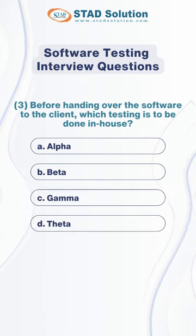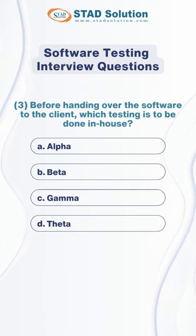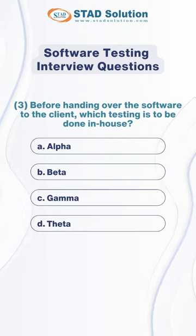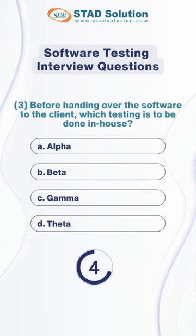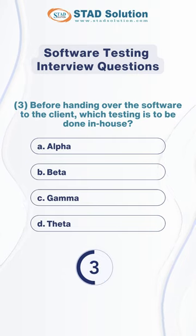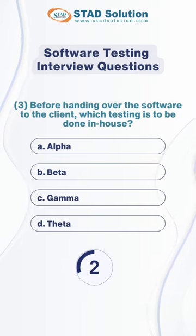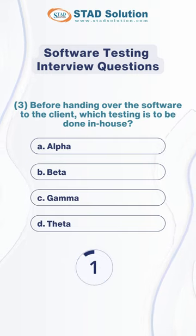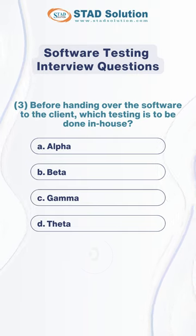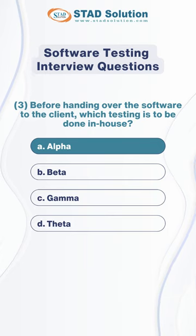Before handing over the software to the client, which testing is to be done in-house? The correct answer is alpha.